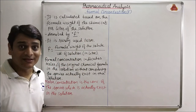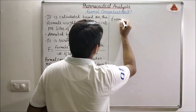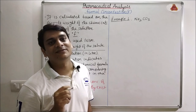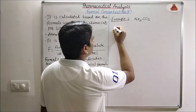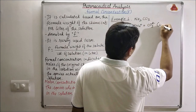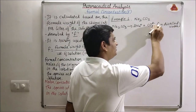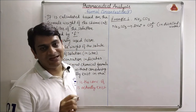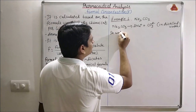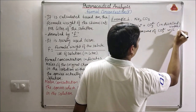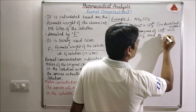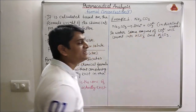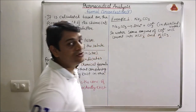For better understanding of formal concentration, here I am taking the example of Na2CO3. If we dissolve Na2CO3 in distilled water, it will dissociate as 2Na⁺ plus CO3²⁻. In water, all this CO3²⁻ will not remain as is — it will react with water and be converted into HCO3⁻.